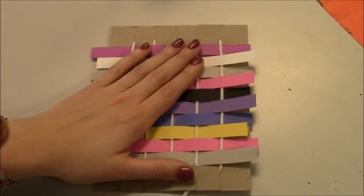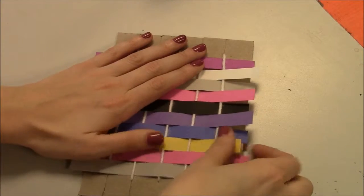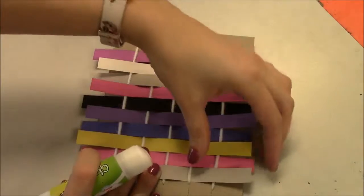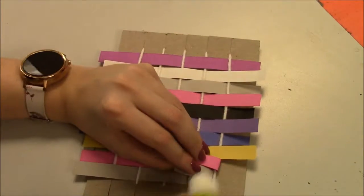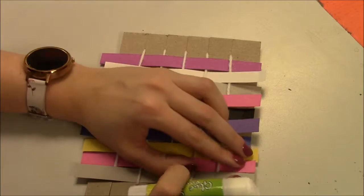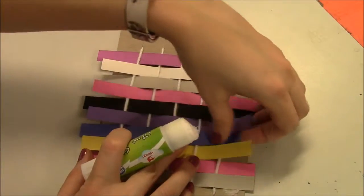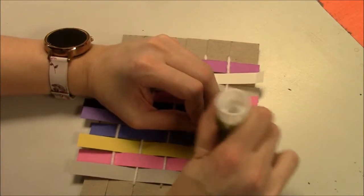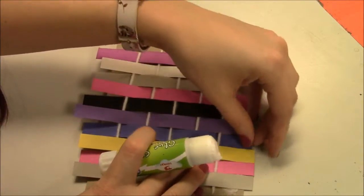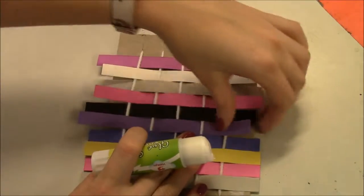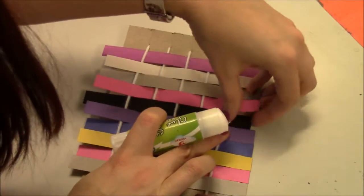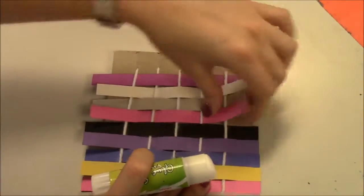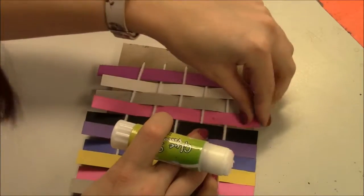To finish up our weavings, we are going to glue the papers down on the edges so they won't fall out. So you're going to get a glue stick. And you're going to lift some of your papers up on one side, maybe two at a time. You're going to put some glue on your cardboard. And then you're going to push those papers down, trying to make sure that they stay even. I'm going to take two, put some glue, and press it down. Take two, put some glue, and stick it down.